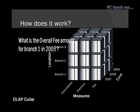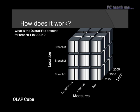Let's ask another question: what is the overall fee amount for branch 1 in 2005? Which square would that go to? Okay, so if we've worked out where that would be, we should notice that it would be sitting in the back right-hand corner. Now, this is putting into our minds how it all fits together. In reality it doesn't work exactly like this, but for us to understand how cubes work this is the best approach we can take — it is three dimensional and we can see how it all fits together.